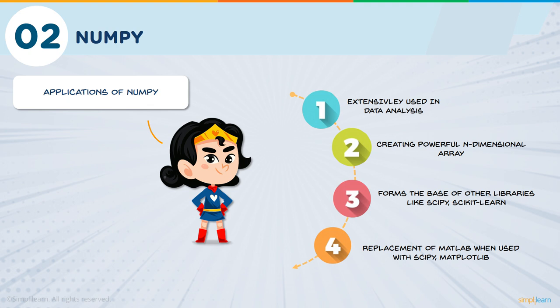Now let's talk about the applications of NumPy. NumPy, along with Pandas, is extensively used in data analysis, which forms the basis of data science. It helps in creating the powerful n-dimensional array. NumPy is extensively used in machine learning model creation, where it forms the base of other libraries like SciPy and Scikit-learn. All machine learning models will have their base as NumPy or Pandas. Also, when NumPy is used with SciPy and Matplotlib, it can be used as a replacement for MATLAB.